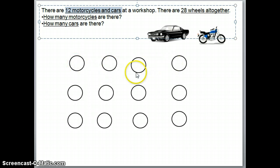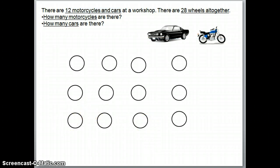1, 2, 3, 4, 5, 6, 7, 8, 9, 10, 11, 12. Once you've drawn these 12 circles, we are not yet sure how many motorcycles and cars are there, right?